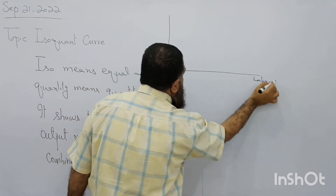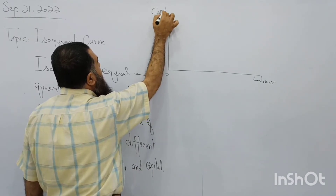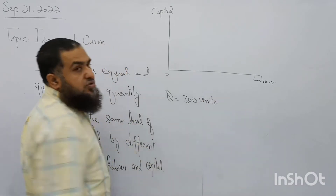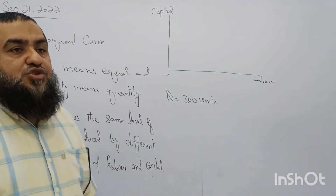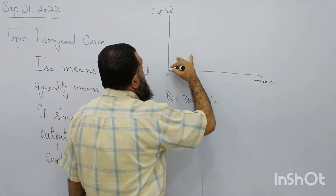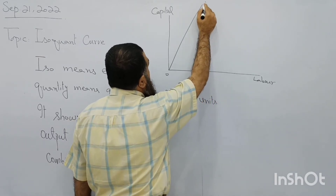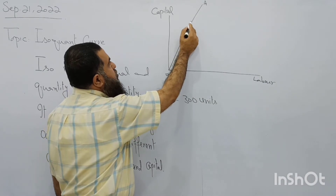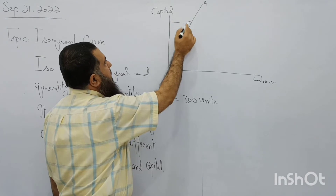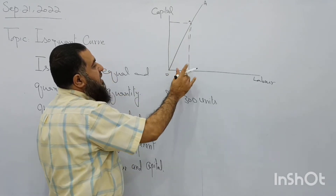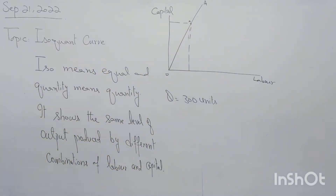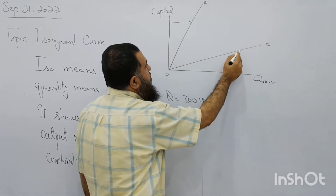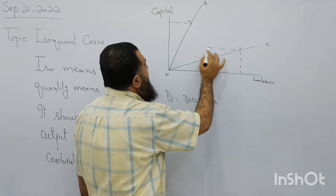Here I am taking labor on one axis and capital on the other. Now the output we are going to decide to produce — say 300 units. Whatever quantity the producer is willing to produce using labor and capital, there can be three methods. Method A is a simple model: to produce 300 units it requires a certain amount of capital and a certain number of workers. Method C shows the firm applying more labor and less capital.